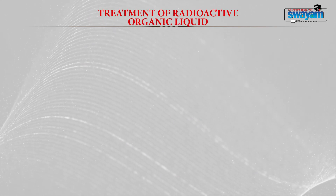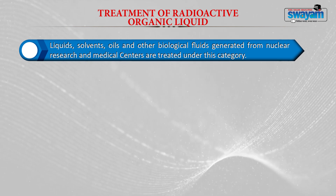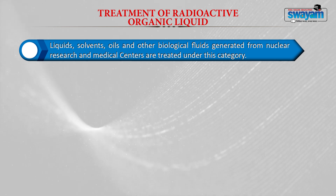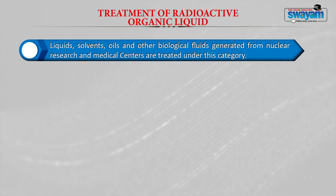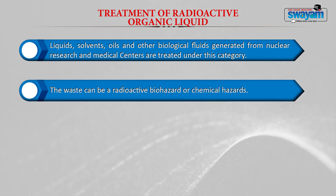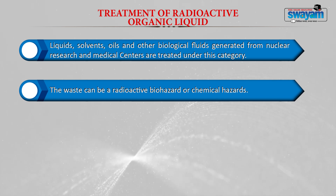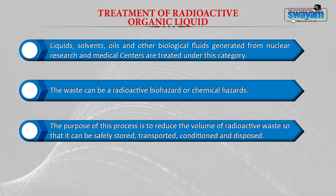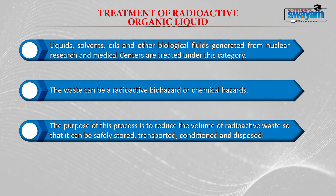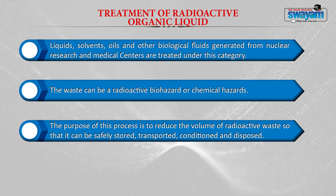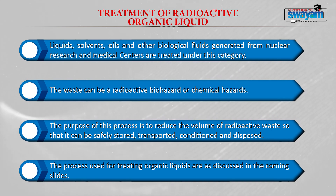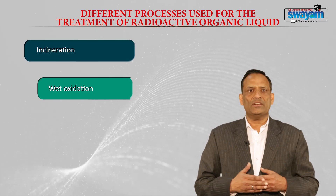Treatment of radioactive organic liquids: liquids, solvents, oils, and other biological fluids generated from nuclear research and medical centres are treated under this category. The waste can be radioactive, biohazardous, or a chemical hazard. The purpose is to reduce the volume of radioactive waste so it can be safely stored, transported, conditioned, and disposed. Processes used include incineration, wet oxidation, acid digestion, and distillation.